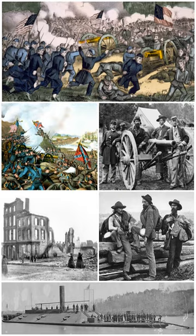The South argued that each state had the right to secede — leave the Union — at any time, and that the Constitution was a "compact" or agreement among the states. Northerners including President Buchanan rejected that notion as opposed to the will of the Founding Fathers, who said they were setting up a perpetual union. Historian James McPherson writes concerning states' rights and other non-slavery explanations: "While one or more of these interpretations remain popular among the Sons of Confederate Veterans and other Southern heritage groups, few professional historians now subscribe to them. Of all these interpretations, the states' rights argument is perhaps the weakest. It fails to ask the question: states' rights for what purpose? States' rights, or sovereignty, was always more a means than an end, an instrument to achieve a certain goal more than a principle."